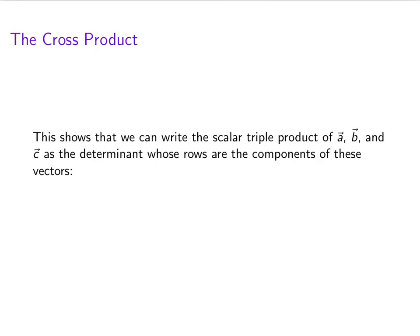But what that shows is that we can write the scalar triple product of a, b, and c, and that's what this thing is called when we do a dot b cross c. That's the determinant whose rows are the components of these vectors.